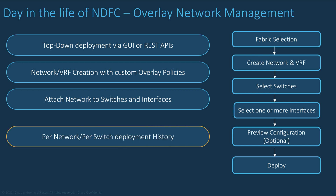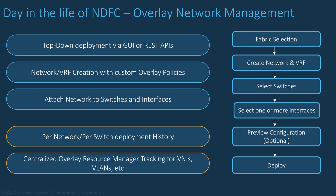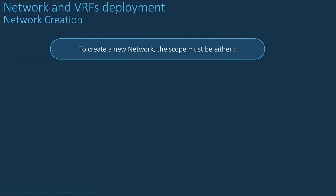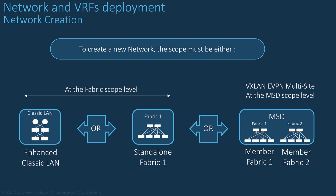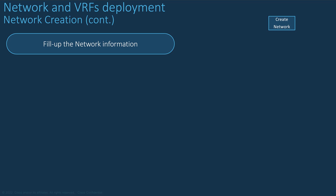After the networks have been deployed, you can preview the historical deployment per network and per switch. The resource manager continuously tracks VNIDs and VLAN IDs, so NDFC is always aware of what has been consumed, even when you use your own VLAN ID. NDFC centralizes tracking of all deployments in the Fabric Builder. To create a network, the scope must be either a standalone fabric or a multi-site domain if the fabric belongs to one.